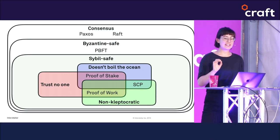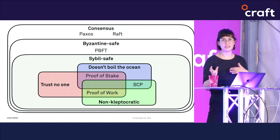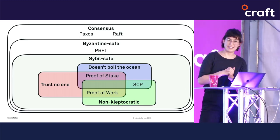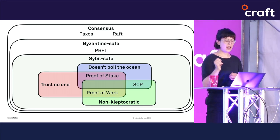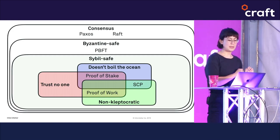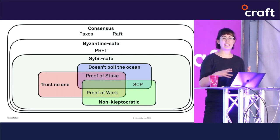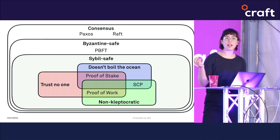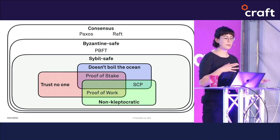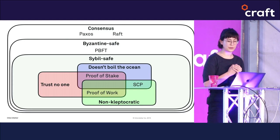Let's recap this landscape. Today we've talked about Paxos, one of the older consensus algorithms and maybe not as complicated as it seems. We've talked about Raft, a rethinking of Paxos with similar guarantees around safety and liveness. We've talked about PBFT, which adds the additional guarantee of Byzantine fault tolerance — it can handle some bad behavior from nodes. But none of these algorithms are Sybil-safe, so none are appropriate for an open network like Bitcoin, Ethereum, or Stellar.